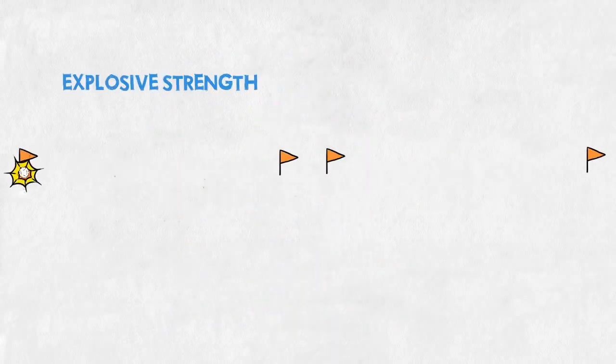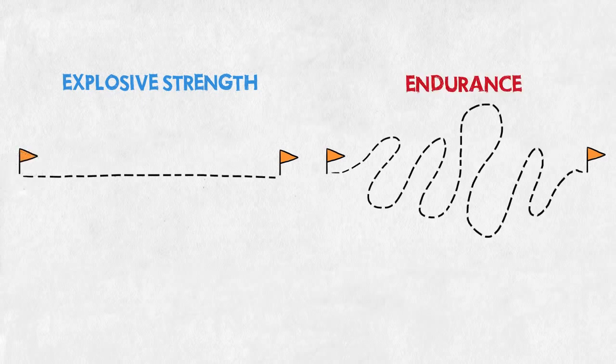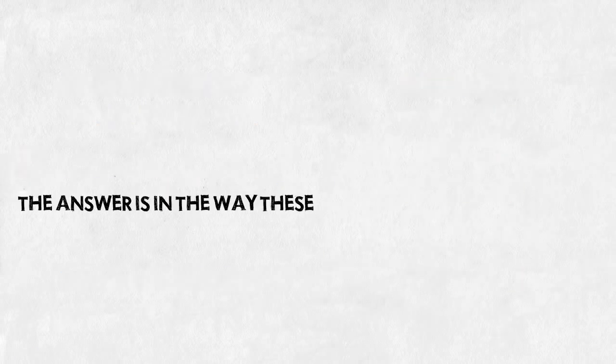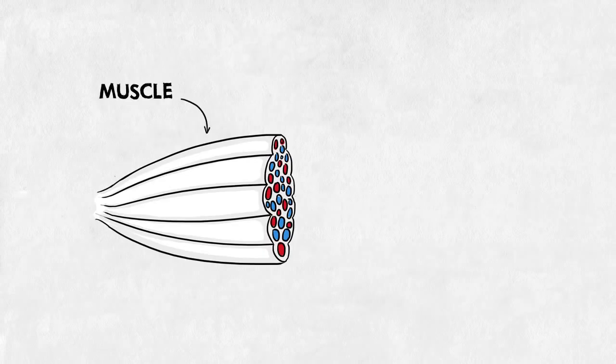Simple. They practice different sports. It's explosive strength versus endurance. The answer is in the way these athletes train their muscles. What you need to know about muscles is that they contain different fibers.